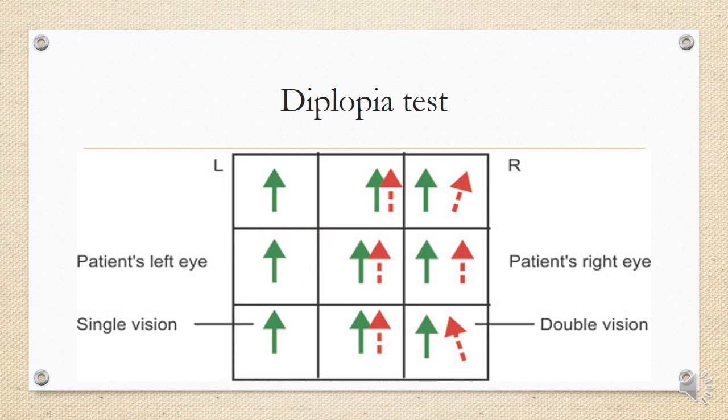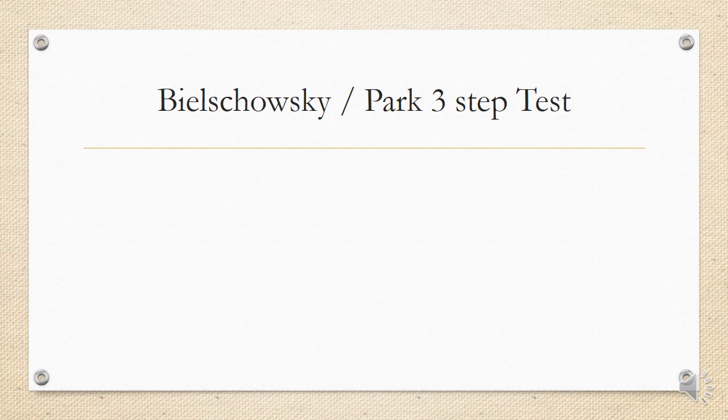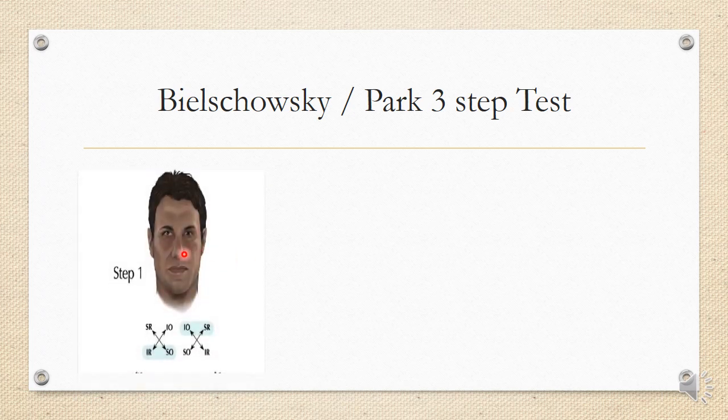Bielschowsky's three-step test is one of the most important tests for identifying which vertical muscle is paralyzed. It identifies, among eight muscles, which one is responsible for the hypertropia or hypotropia — specifically whether it is the inferior oblique, superior oblique, superior rectus, or inferior rectus, and of which eye.